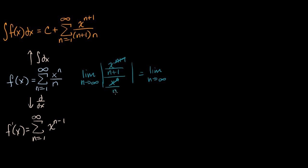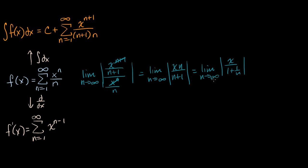This is just going to be an x, and this n is going to end up on top. So this is going to be x times n over n plus one. If we divide both the numerator and the denominator by n, we're going to get x over one plus one over n. This term is going to go to zero, so this is just going to be equal to the absolute value of x. The ratio test tells us that this series is convergent if this is less than one, divergent if this is greater than one, and inconclusive if this equals one. So we know we are convergent for the absolute value of x less than one.